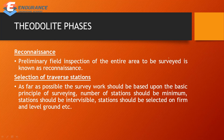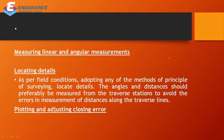For station selection, the survey work should be based on the basic principle of surveying. The number of stations should be minimum. Stations should be inter-visible. Stations should be selected on firm and level ground. If the number of stations is minimum, the calculation work will be less, and the survey will be easier.